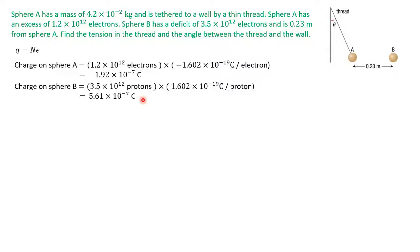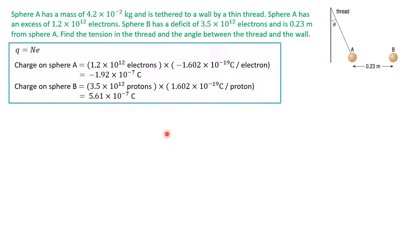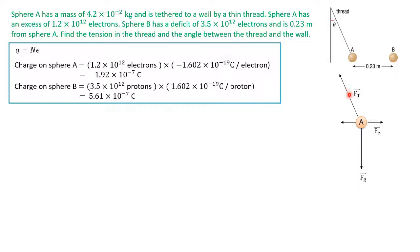Now that we have the charge on sphere A and sphere B, we can calculate the electrostatic force between them. But before applying Coulomb's Law, let's first look at a free-body diagram for sphere A. On sphere A, we have gravity acting on it, a tension force in the thread, and an electrostatic force between A and B. We can also resolve the tension force into components.